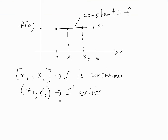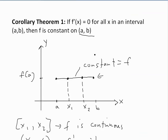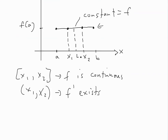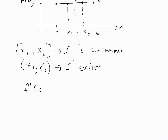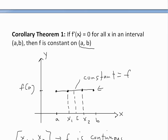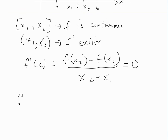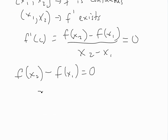Applying the mean value theorem with these conditions — f is continuous and differentiable on this interval — we need a number c anywhere in between, where f'(c) equals f(x2) minus f(x1) all divided by x2 minus x1. Our a and b are just replaced with x1 and x2. But we're given the derivative is zero everywhere, so we plug in zero. Multiplying out, we get f(x2) minus f(x1) equals zero, or f(x2) equals f(x1).